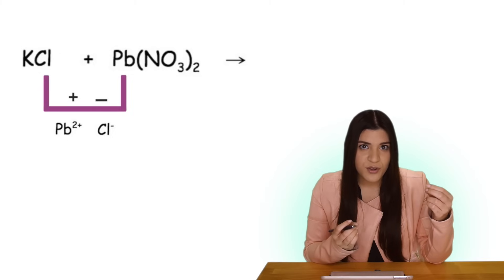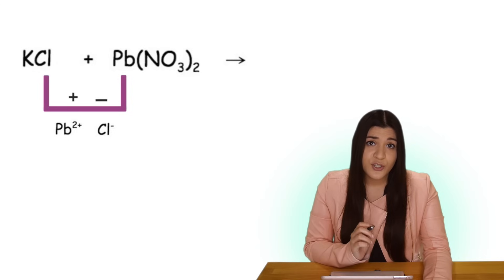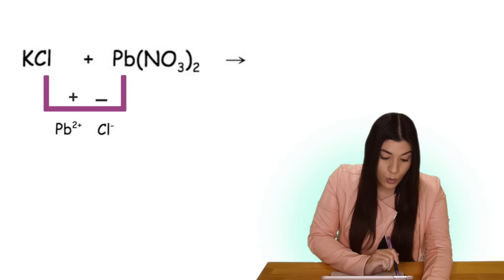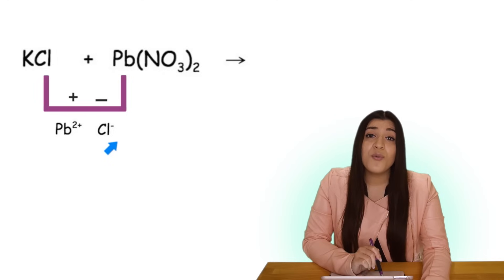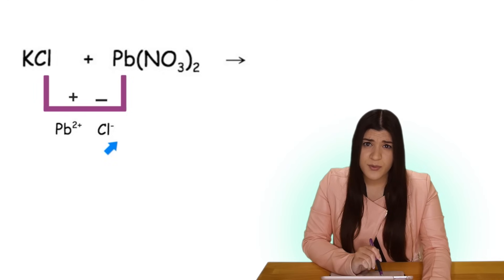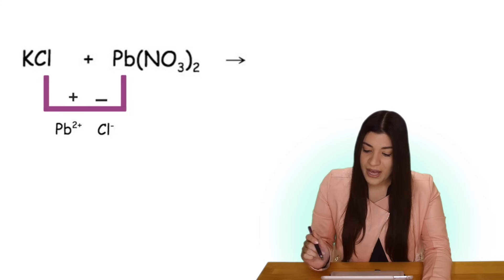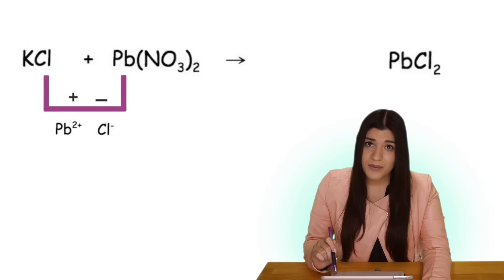Always put the metal first then the non-metal. We know that lead is a two plus charge and chlorine is a negative one charge. What will happen is this two is going to come down and go with our chlorine as the subscript. So our first product will be lead chloride.